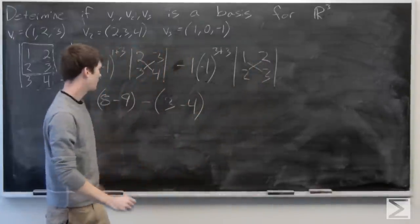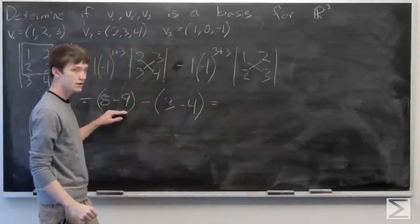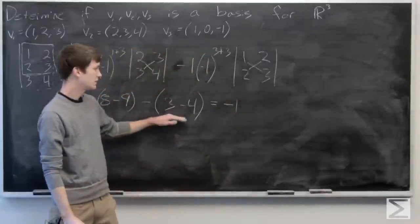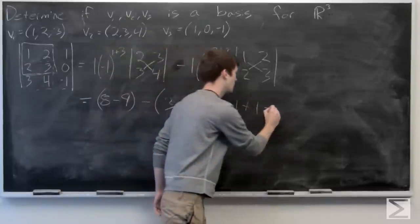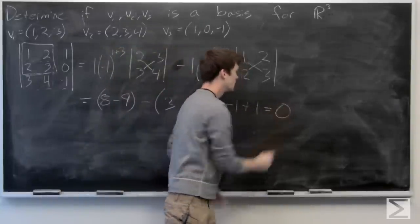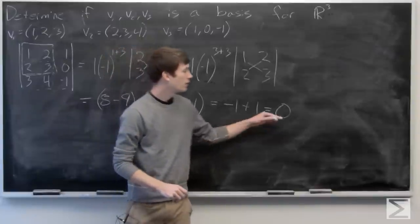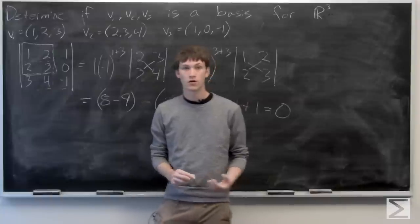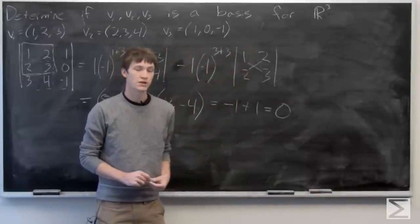So we have negative 1 minus a negative 1 plus 1 is equal to 0. So since our determinant is equal to 0, we know that our vectors v1, v2, and v3 are not linearly independent. And hence, they are not a basis for R³.